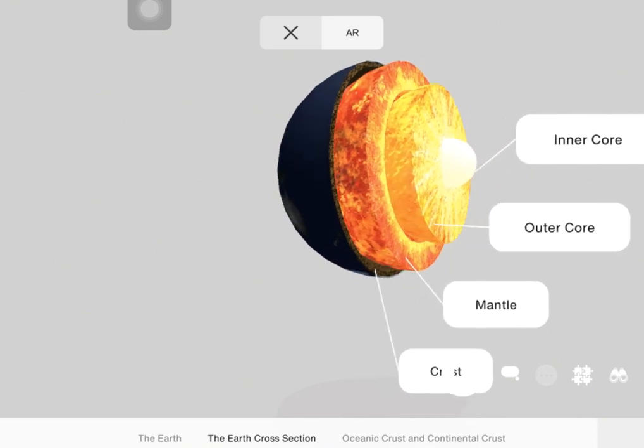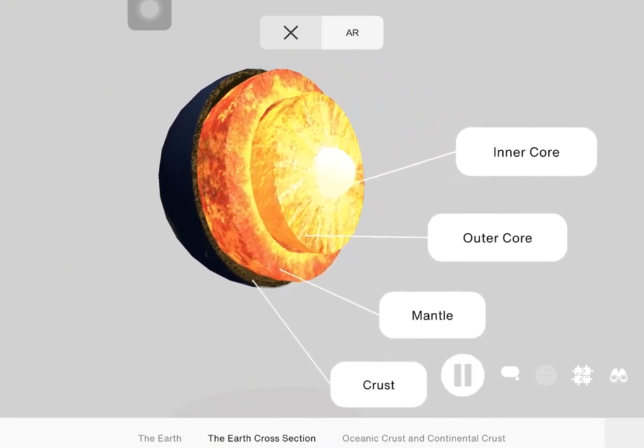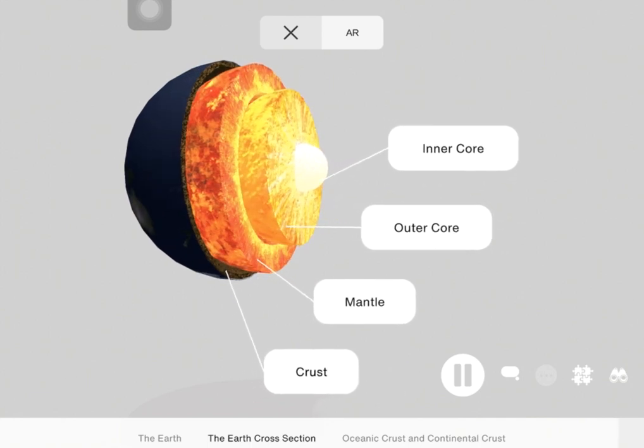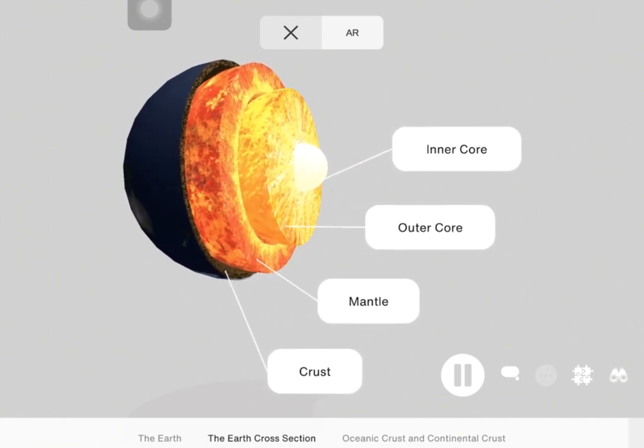The temperature at the inner core surface is approximately 5700 kelvins or 5,430 degrees Celsius, which is about the temperature at the surface of the Sun.